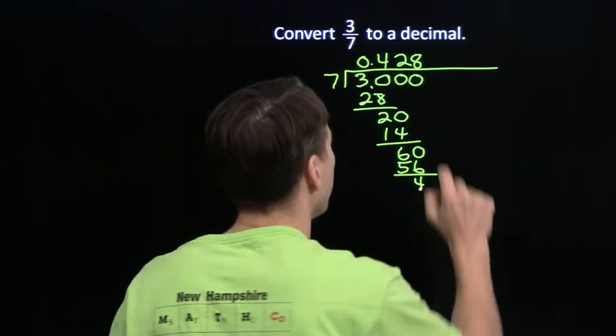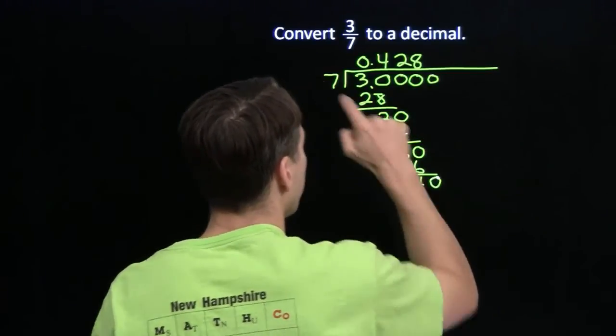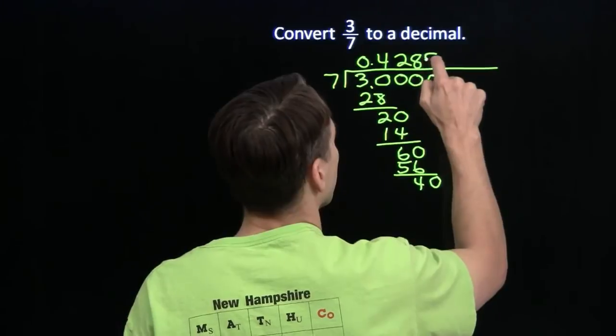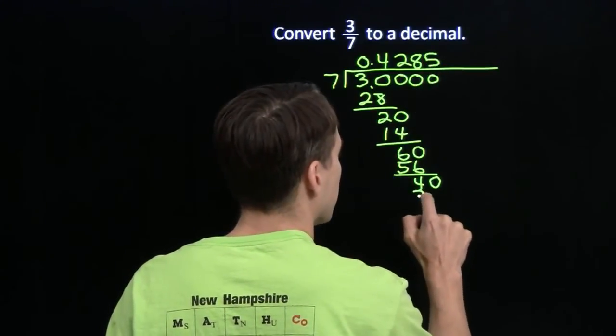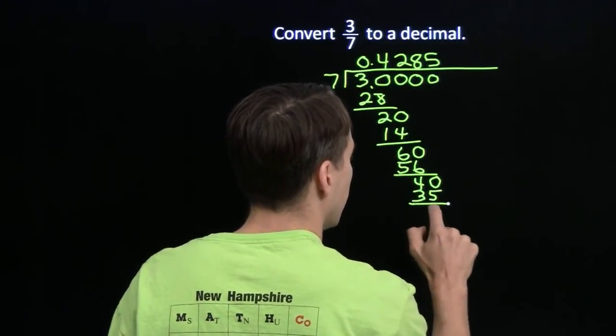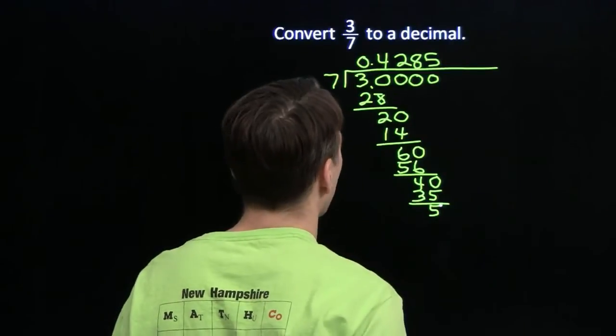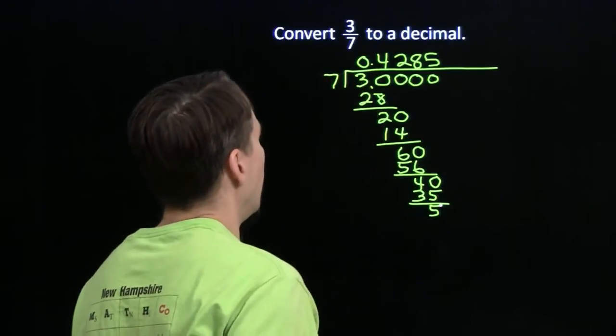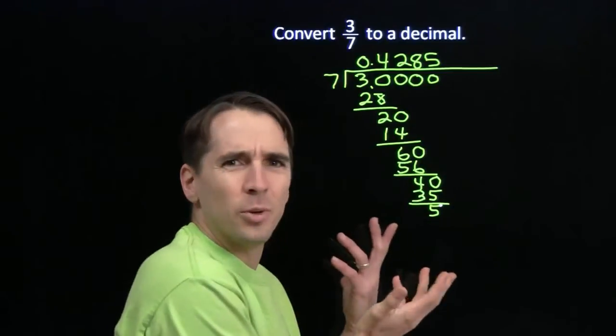Still not repeating. Alright, another zero is 7 into 40. That gives us 5. 5 times 7 is 35, and that gives us 5 left over. Still not repeating. What's going on here? How do we know this is going to repeat?